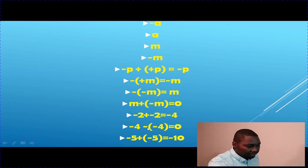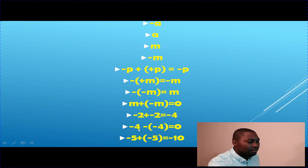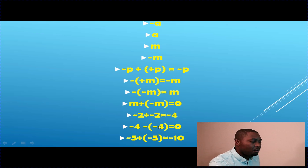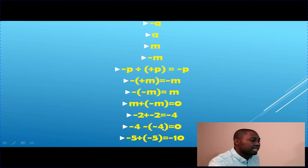The opposite of negative 4 is positive 4. So negative 4 minus negative 4 — a negative times a negative is positive — so negative 4 plus positive 4 equals zero. It's like you have 4 dollars but you owe somebody 4 dollars; if you pay that 4 dollars, what do you have left? Nothing.